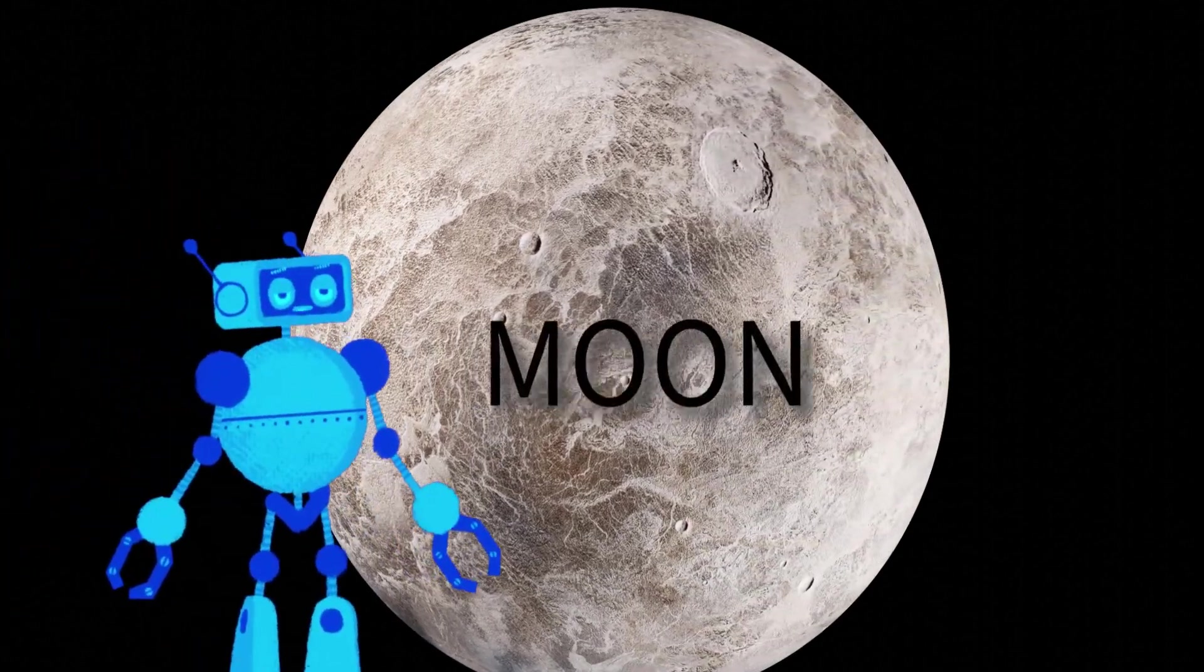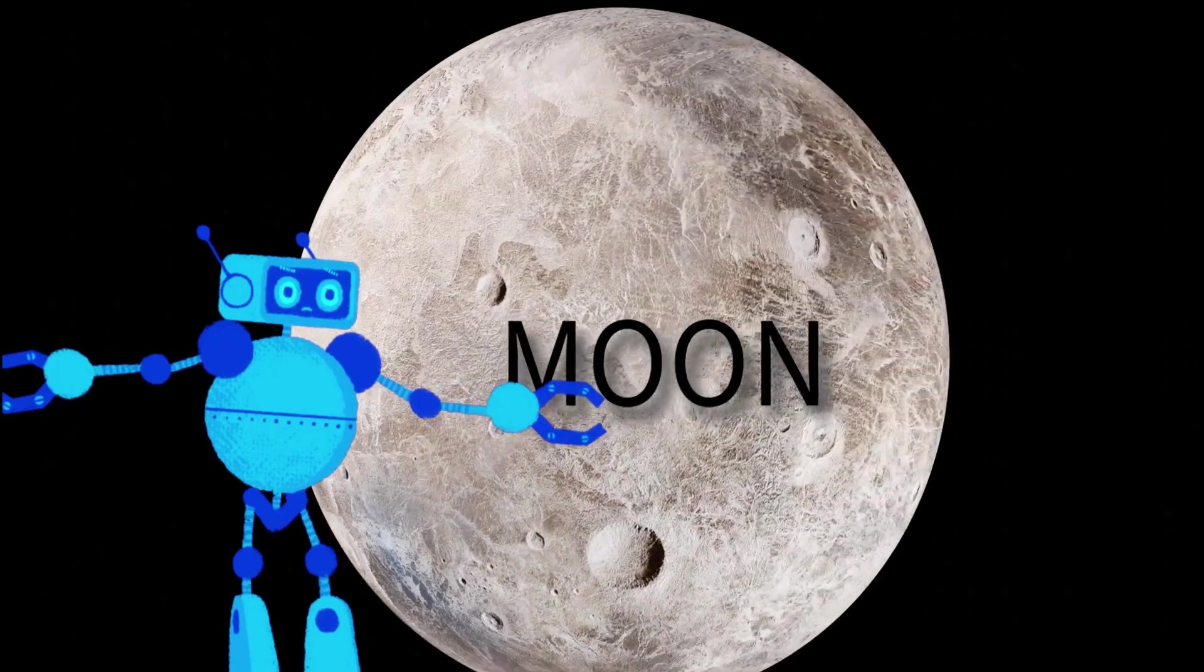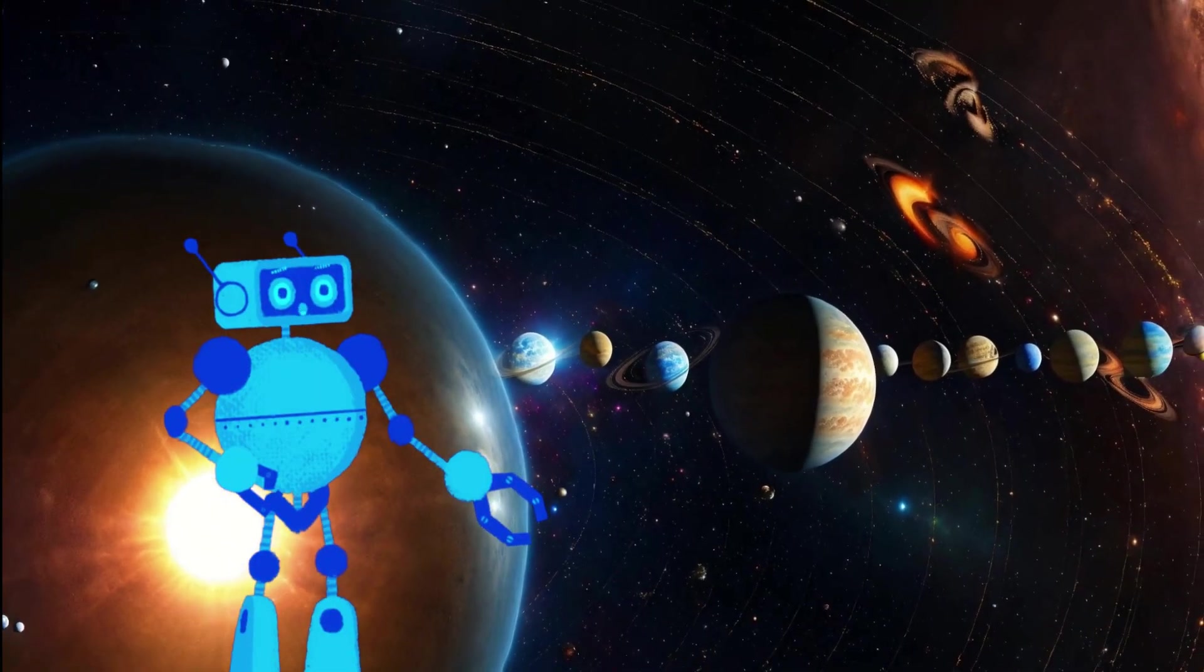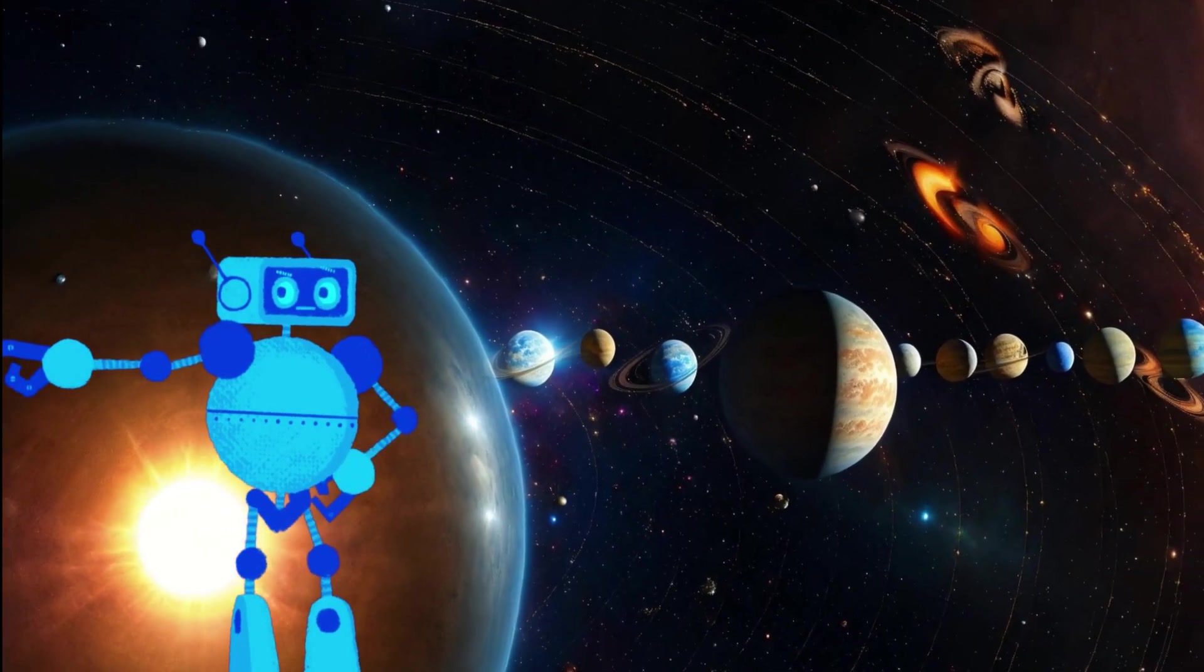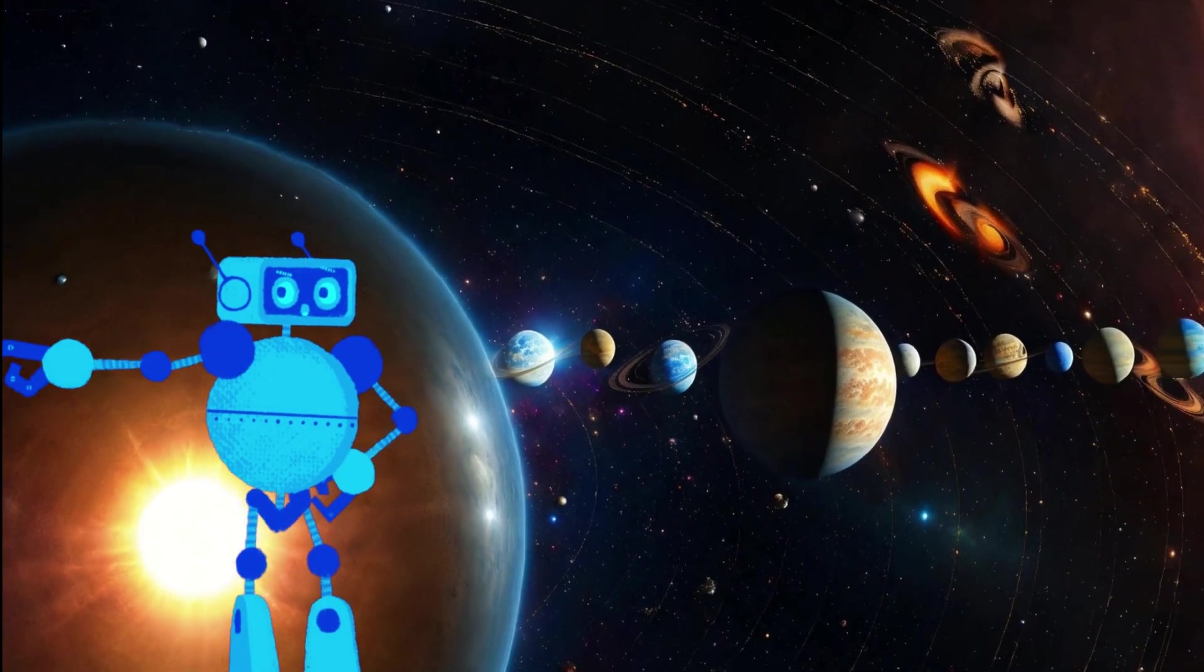Moons, the traveling companions. Many planets, including Earth, have moons that orbit around them. Earth has one moon, but Jupiter has a whopping 79 moons, and Saturn is not far behind with 83. These moons come in various sizes and play crucial roles in the dynamics of their respective planets.